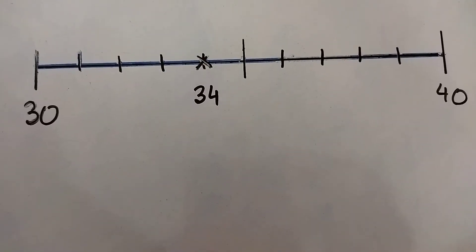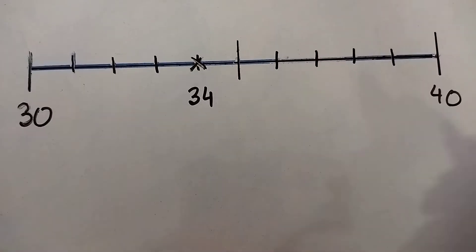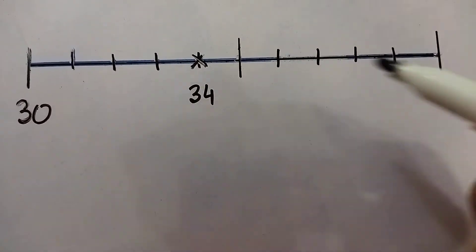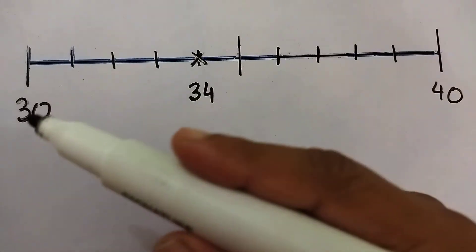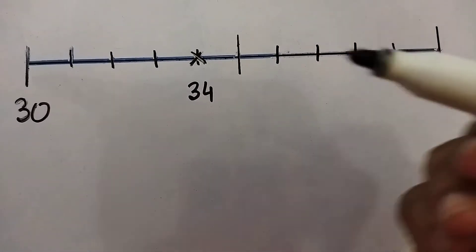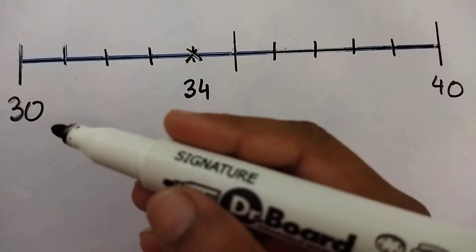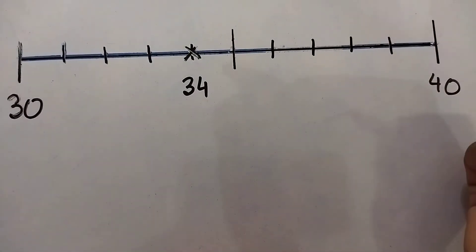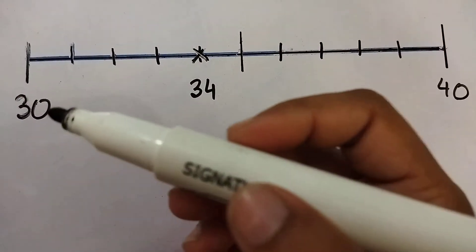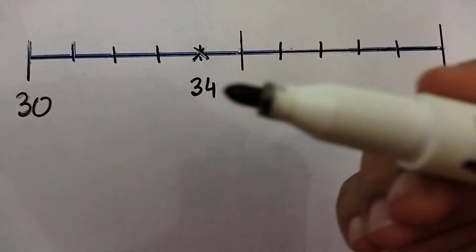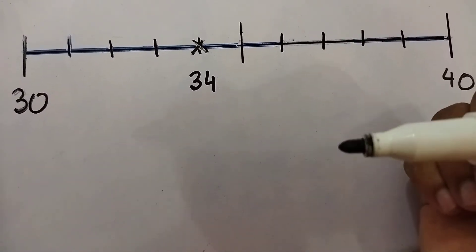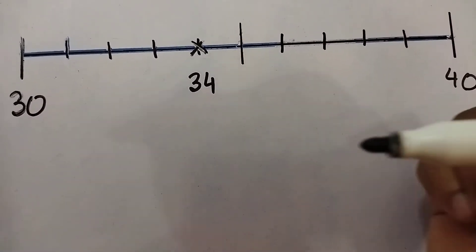To solve this problem, we will use a number line. We have a number line that is between 30 and 40. How many numbers are in between? Of course, 9 numbers. Because when we say how many numbers are in between 0 and 10, we say there are 9 numbers: 1, 2, 3 till 9.